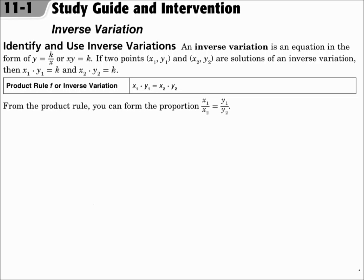An inverse variation is an equation in the form y equals k over x, which can also be written x times y equals k. If you have two points x1y1 and x2y2 that are solutions of an inverse variation, since they both equal k when you multiply them together, they also equal each other. That's the product rule for inverse variation.